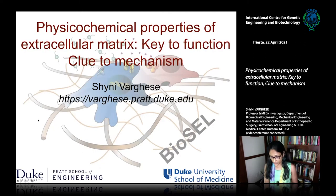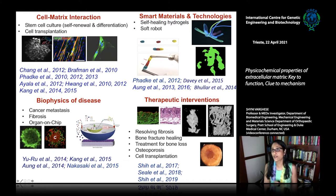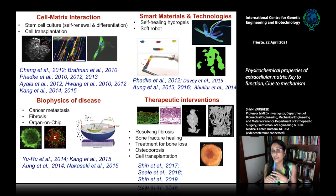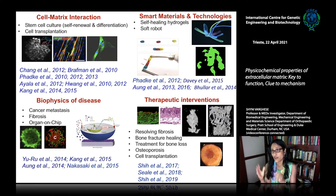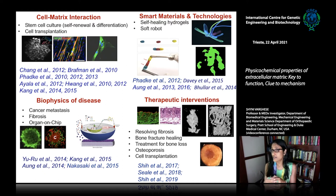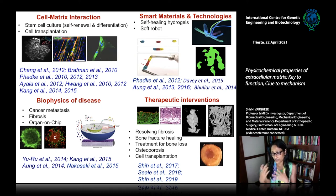A number of technologies we use — one of them is organoid-on-chip technology and other platforms. Moving forward, we try to understand how we can use these fundamental insights to generate new therapies, for example resolving fibrosis, promoting bone fracture healing, or treatment for osteoporosis. In the case of cell transplantation, we are also looking at hemophilia — a factor nine deficiency leading to issues with clotting. We are trying to figure out how we can transplant hepatocytes, whether allogenic, xenogenic, or iPSC-derived, so they can secrete factor nine and thereby mitigate hemophilia.